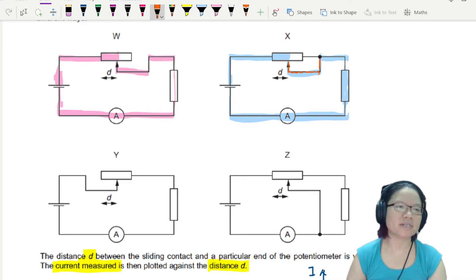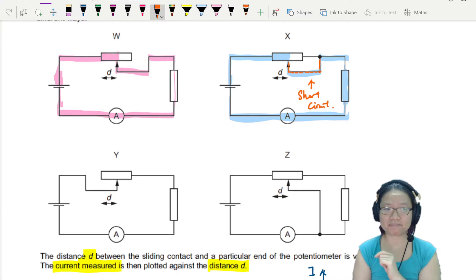I mean, in this case, it's not possible because this part is empty. But for connection X, it is also not possible because this one is short circuit. In other words, this wire has zero resistance. So the current will flow there.